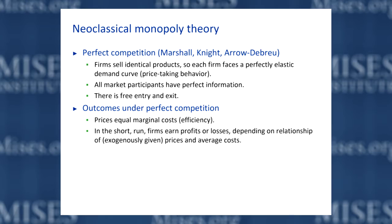In the short run, firms can earn profits or losses depending on the relationship between these exogenously given prices and their average costs of production. So all firms are producing where price equals marginal cost, but at that level, if the firm's average costs are lower than the market price, the firm will earn an economic loss. Why firms would have different cost structures is not really explained by the theory — it's just assumed that could be the case in the short run.